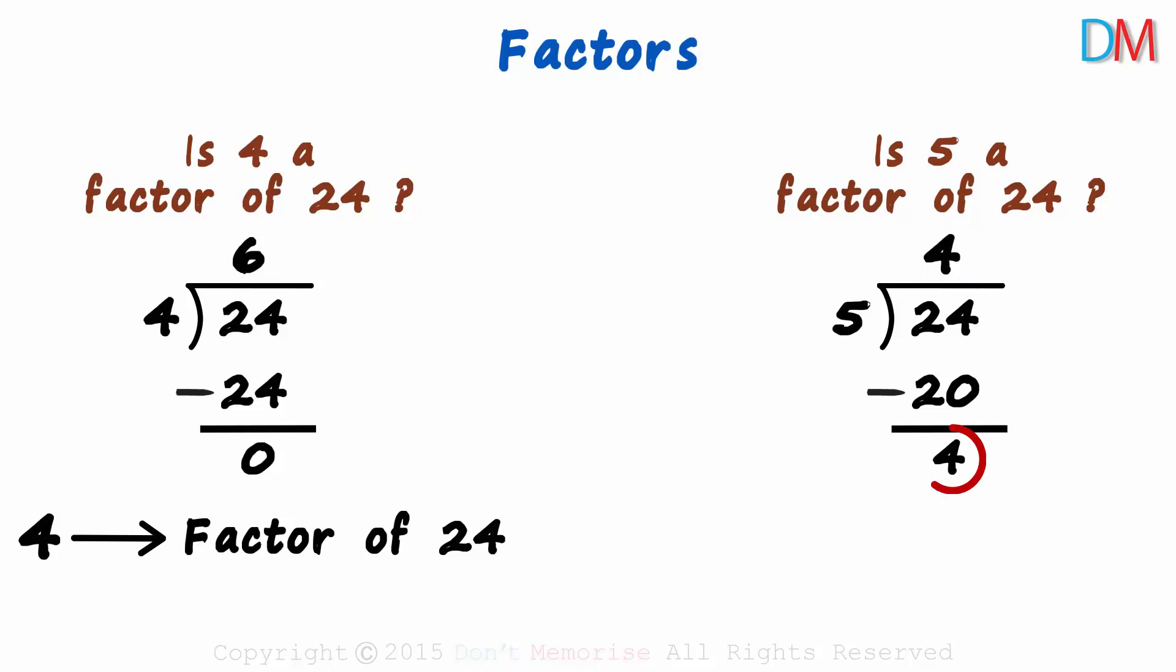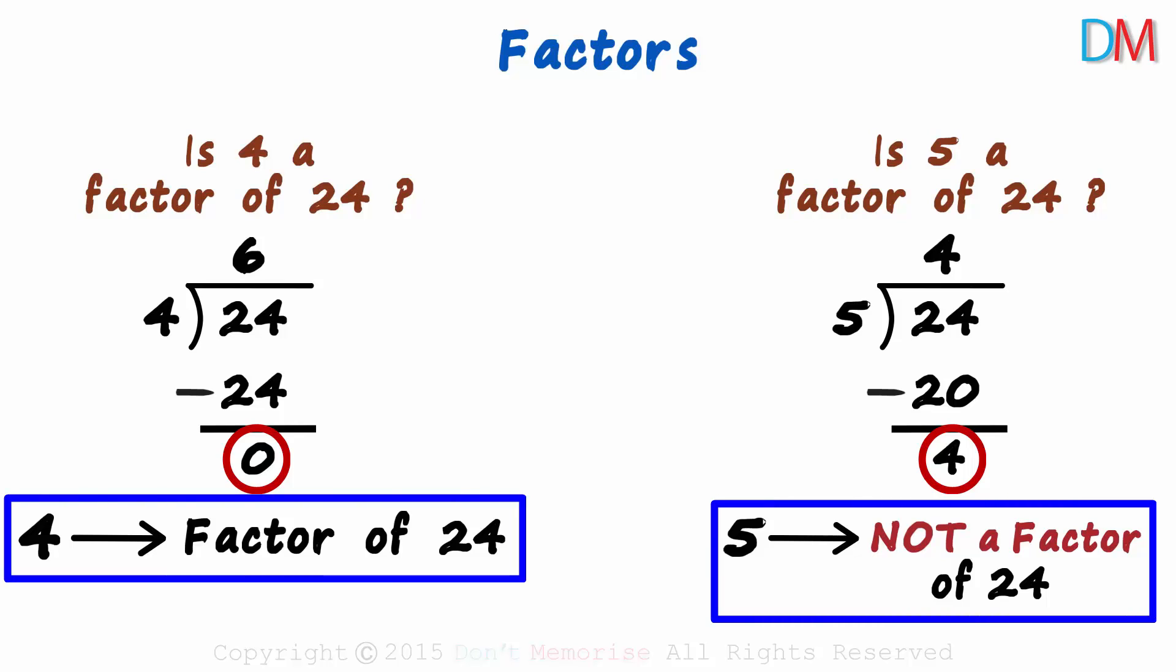Since the remainder is not 0, we can say that 5 is not a factor of 24. That's how we find out if the number is a factor of another or not.